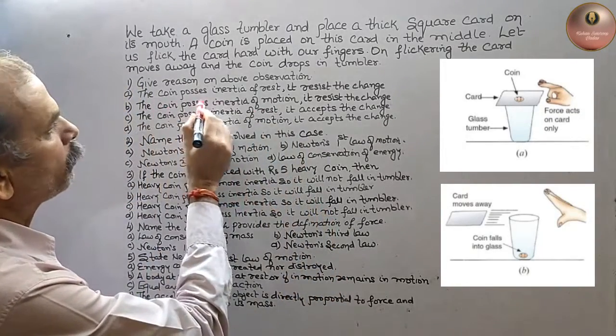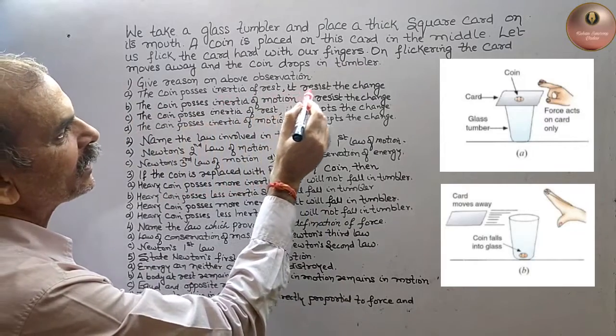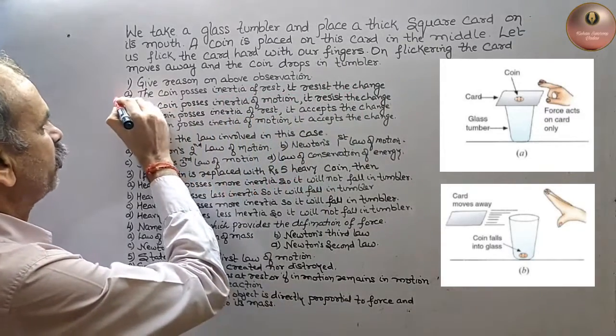The coin possesses inertia of rest. It resists the change. So option A is correct.